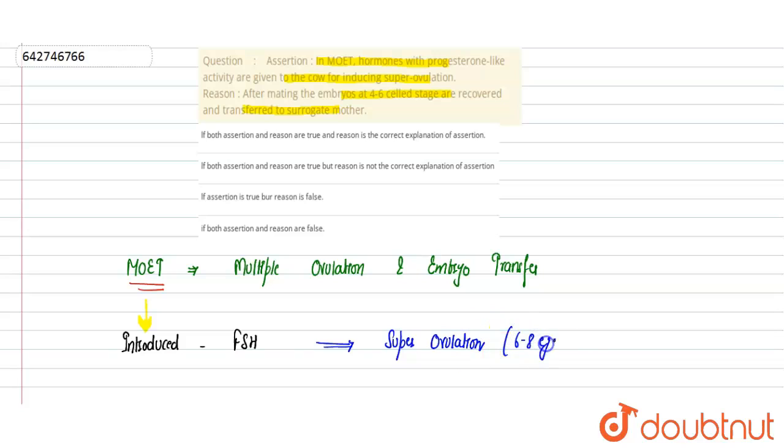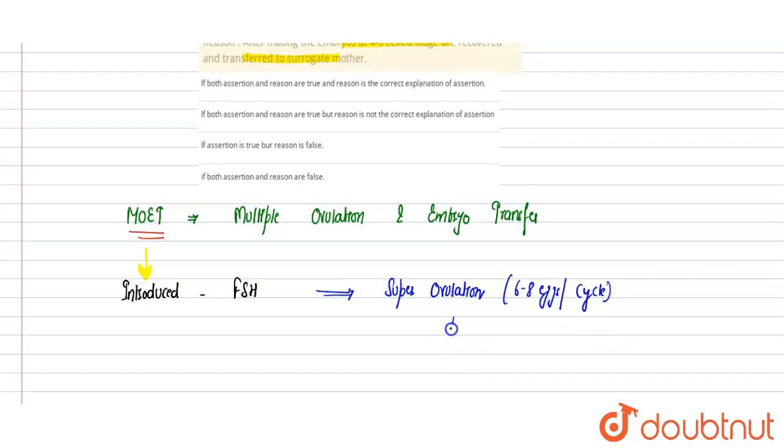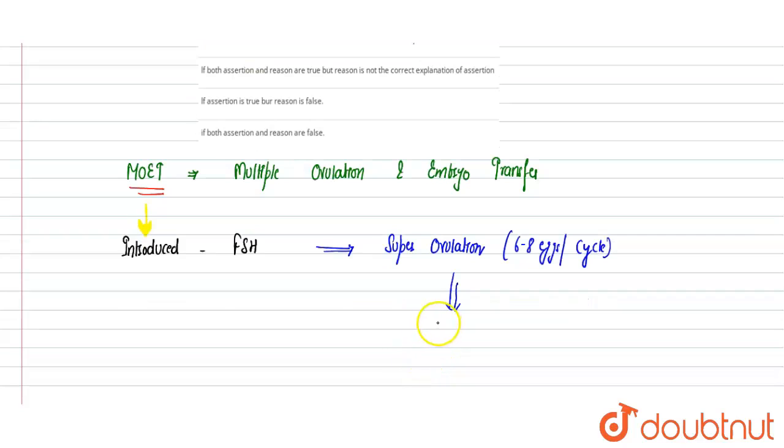Then this super ovulated cattle is artificially inseminated. Semen is introduced and the female is artificially inseminated. After insemination, the sperms present in the semen fertilize the eggs, and embryos are formed - multiple embryos, or we can say six to eight embryos are formed.